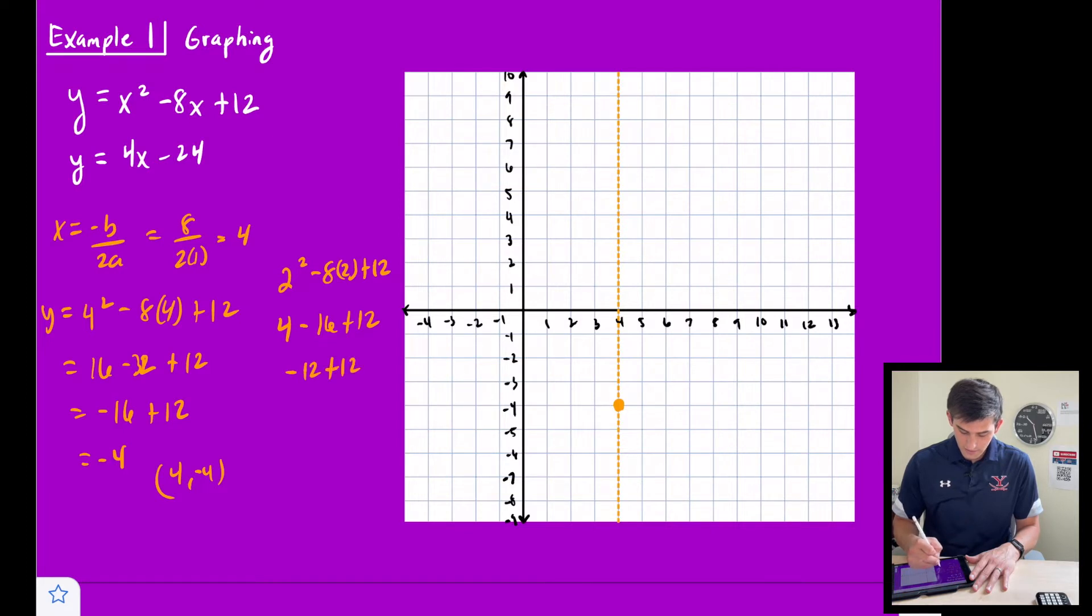So -12 + 12, and we get 0, which means we have the point (2, 0). So we could put that right there. And we would also have (6, 0), right? So we can graph our parabola now.